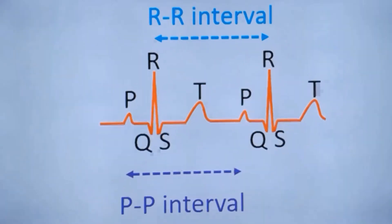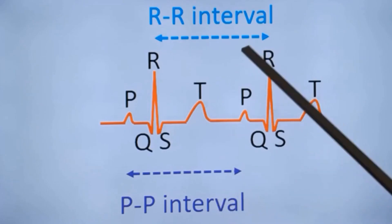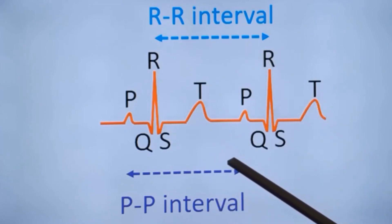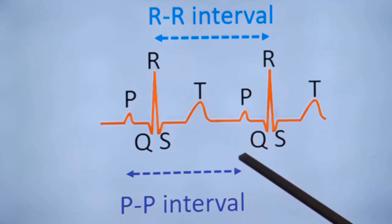For the same reason, these two intervals will be shorter in children compared to adults. Younger the child, shorter the PP interval and RR interval as the heart rate is higher. In newborn, heart rate may be around 140 per minute, while in an adult, it may be only about 74 per minute and in a well-trained athlete, it may be even as low as 40 per minute.